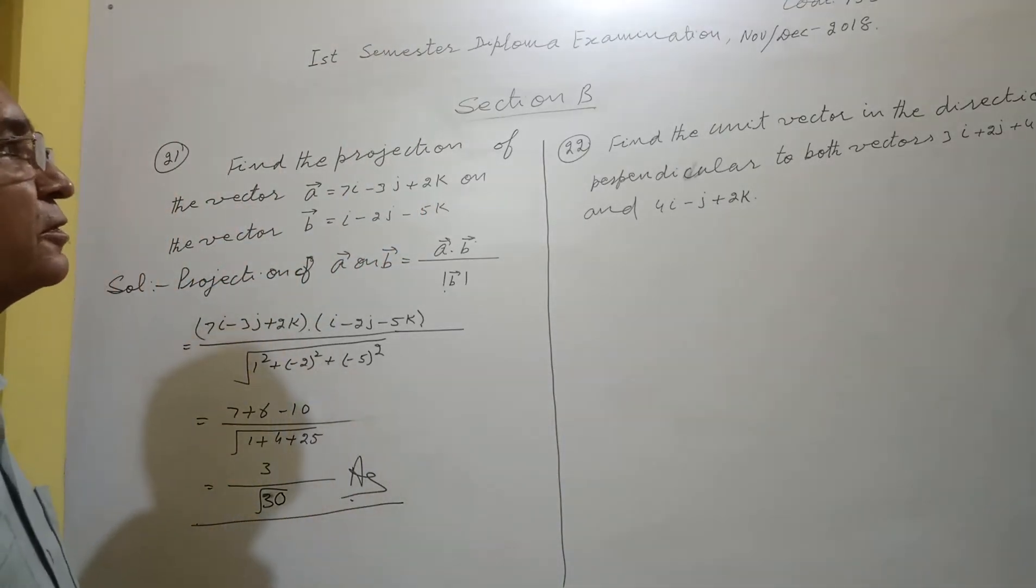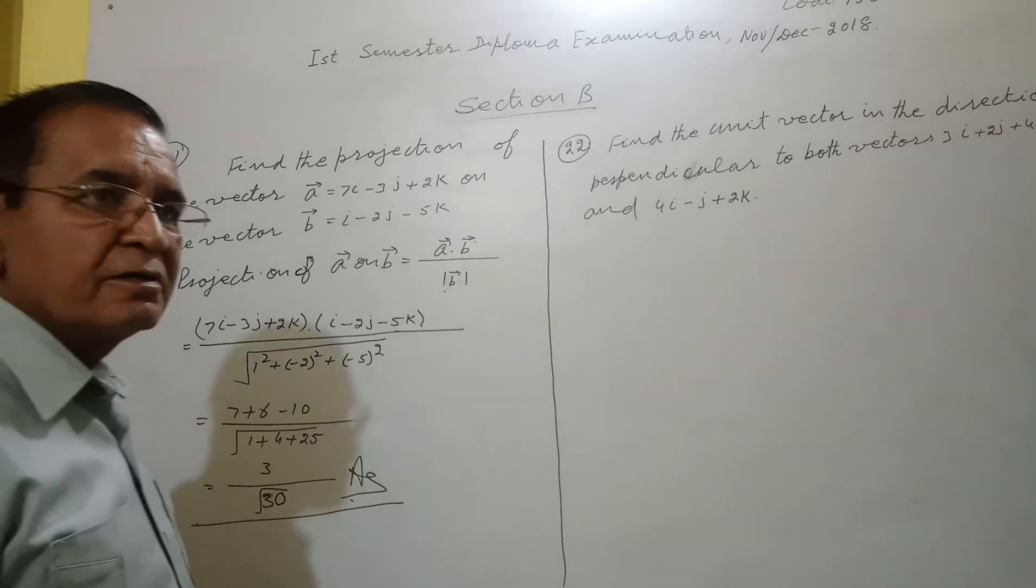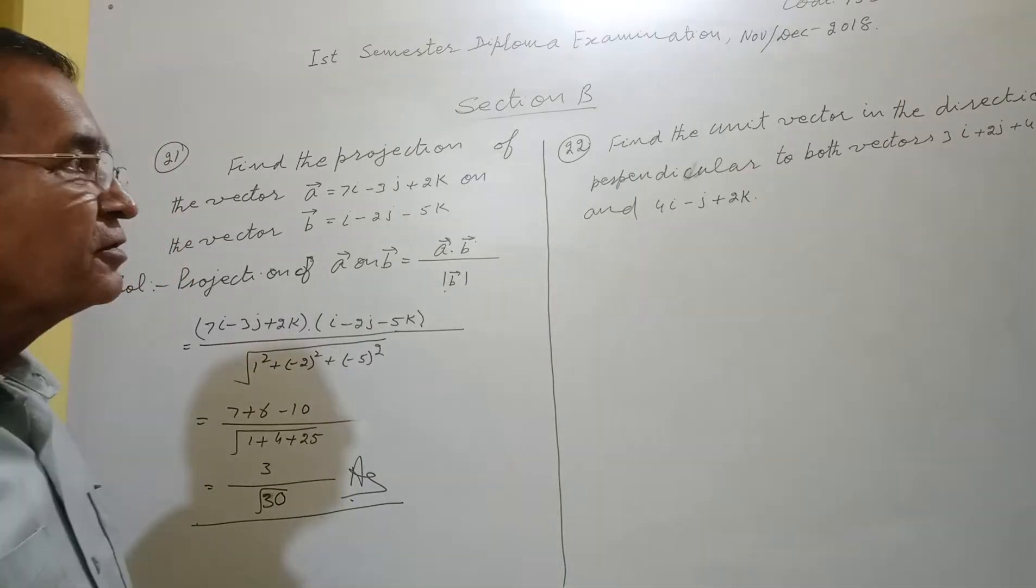Now, 22nd, find the unit vector in the direction perpendicular to both vectors, 3i plus 2j plus 4k and 4i minus j plus 2k. Now, how to find the vector perpendicular to both? Go for the cross product of a and b.